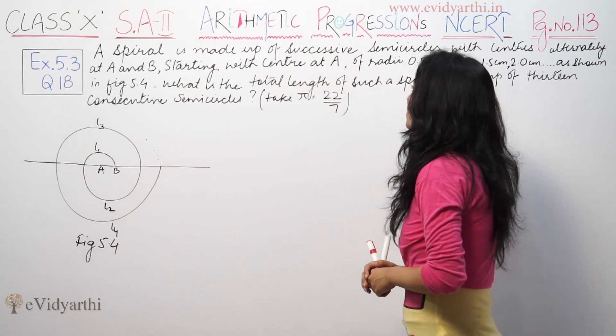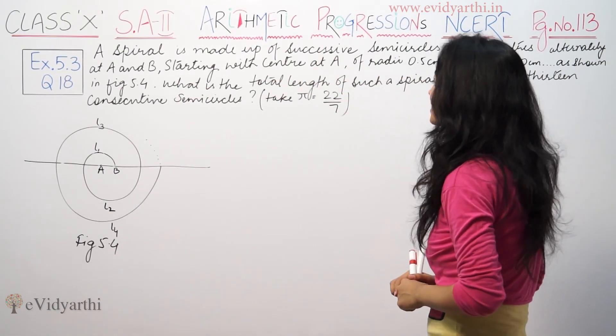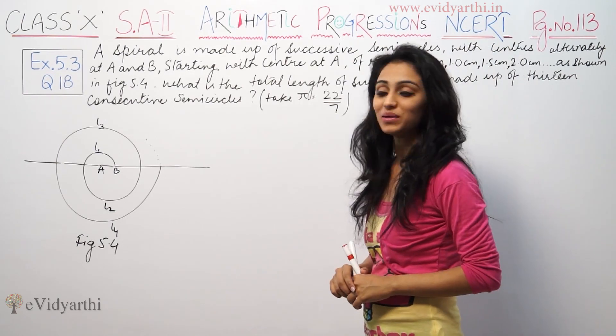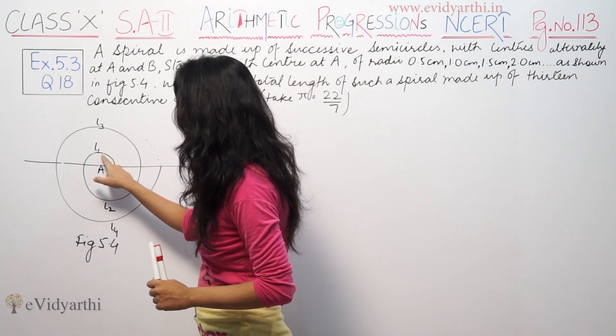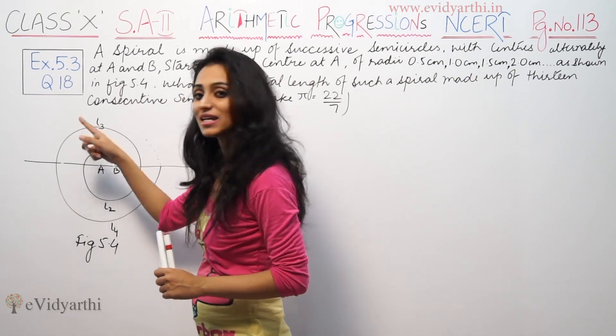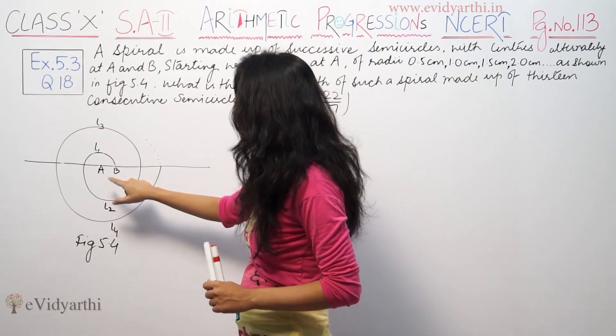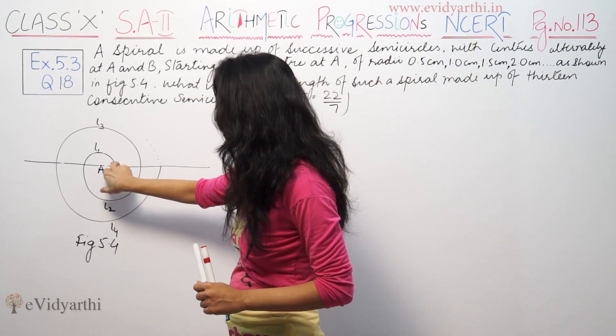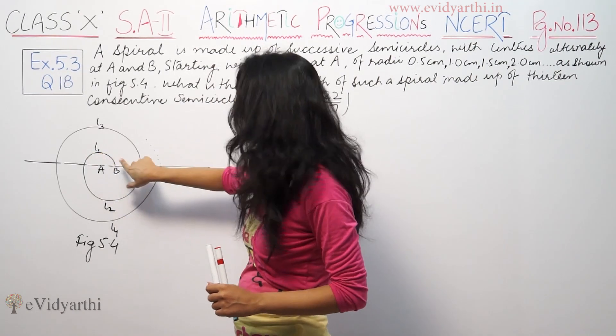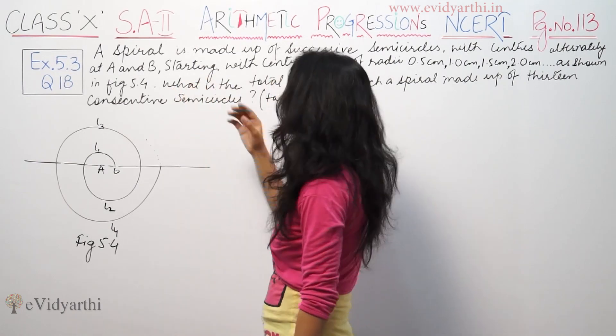It says a spiral is made up of successive semicircles with centers alternately at A and B. This is 13 semicircles. If you can see it here, this is the center and this is the center. The centers are alternately changing.